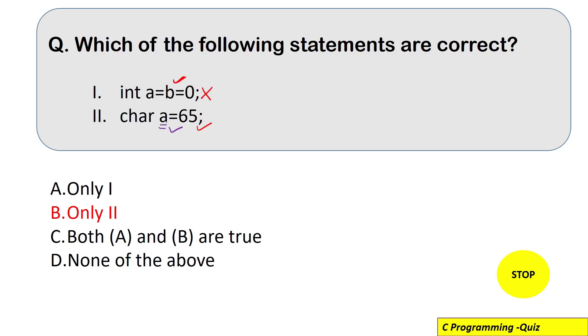So a is a character variable that means it can store a character but 65 is an integer value but then also we are saying that this statement is correct. So let's see first this into our IDE.